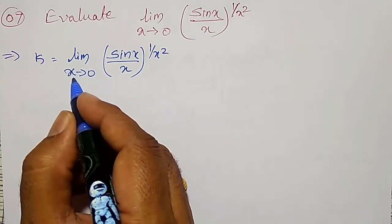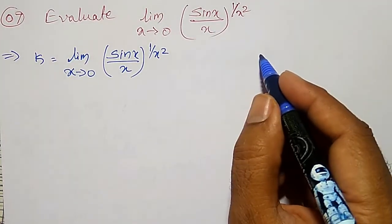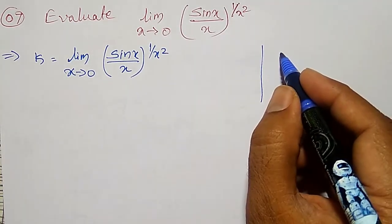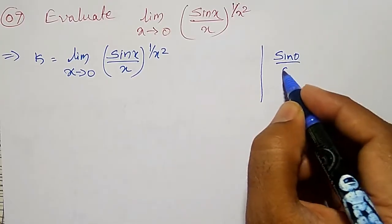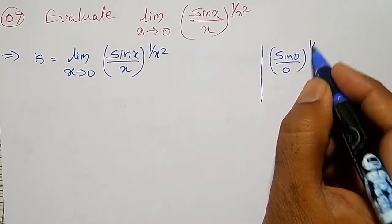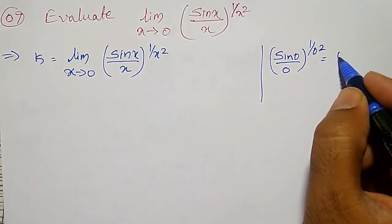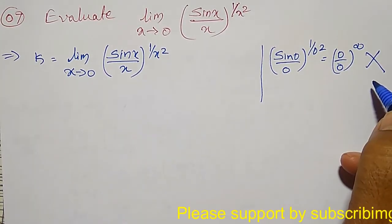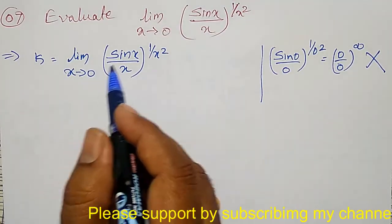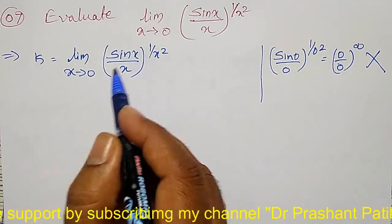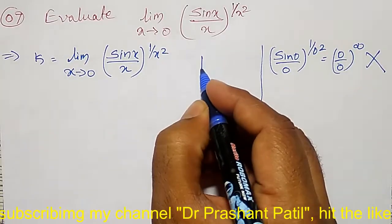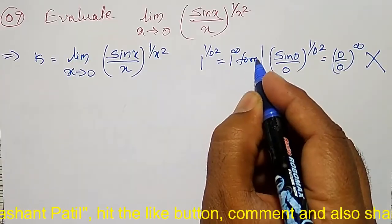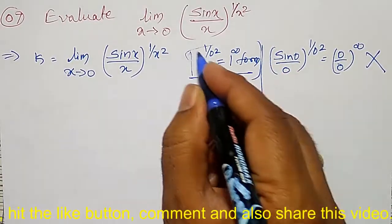First let me identify which indeterminate form it is. To identify that, we put x equal to zero: sine zero divided by zero, raised to 1 by zero square. That is the form zero by zero raised to infinity, which is wrong. As x tends to zero, sin x by x equals 1, so this becomes 1 raised to infinity form.